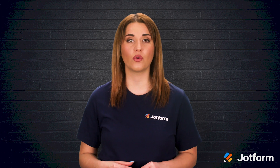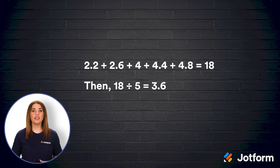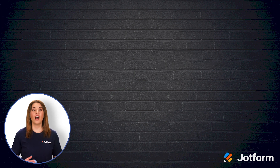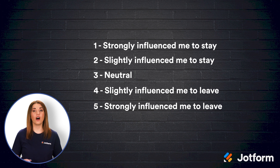The final step in quantifying your 5-point Likert Scale data is to total each category's average sentiment score for one final interview questionnaire score. You do this by totaling the sentiment scores and then dividing that number by the number of total categories. For our example, you'd end up with an average sentiment score for the entire employee exit interview questionnaire of 3.6. A 3.6 lands somewhere between neutral and slightly influenced me to leave, meaning the factors you've asked about are indeed affecting employee turnover.